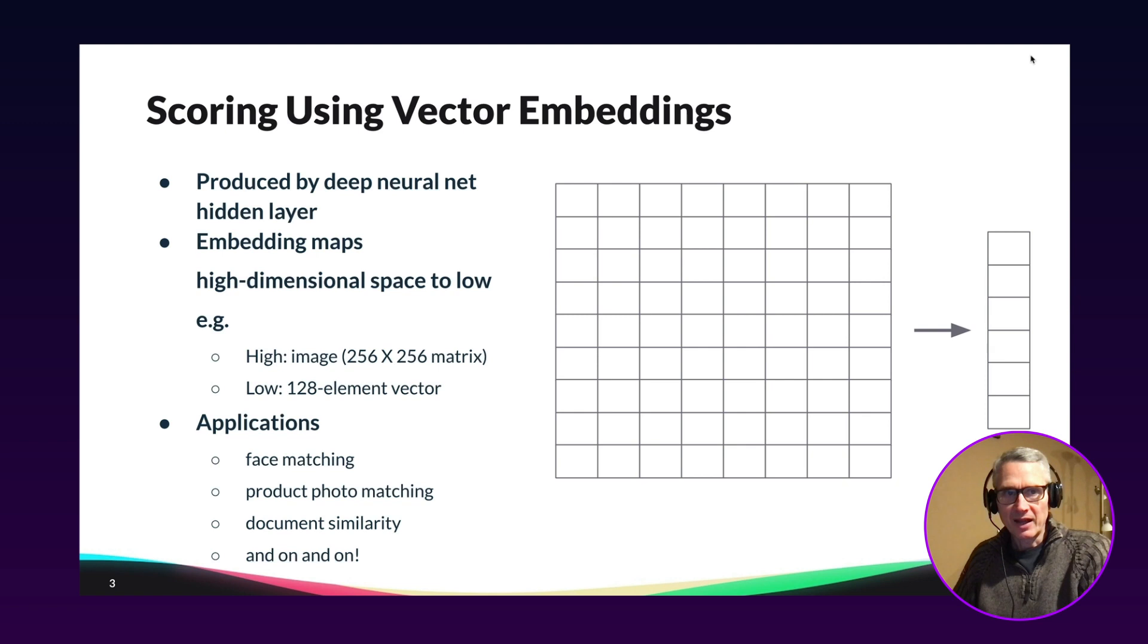Now, how is image matching done these days and how do we do it in SingleStore? So a very popular technique that's evolved over the last 15 years or so in the AI community is to do scoring for image matching and other kinds of matching using what's called vector embeddings.